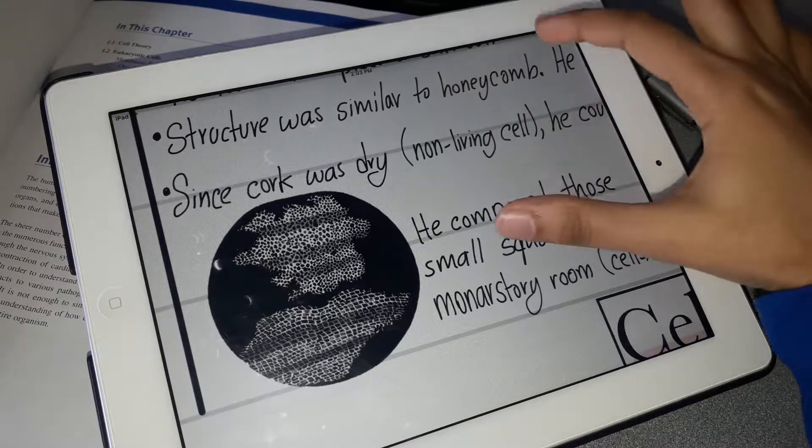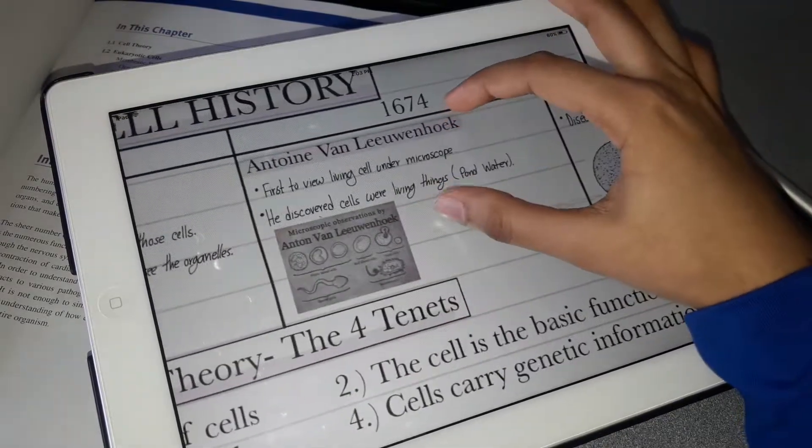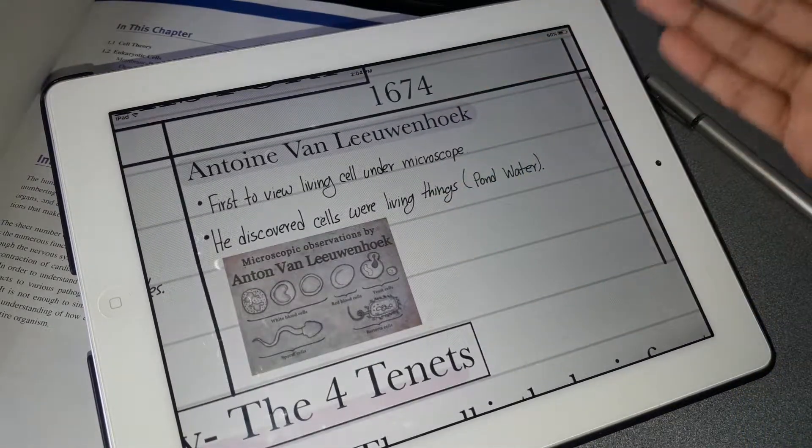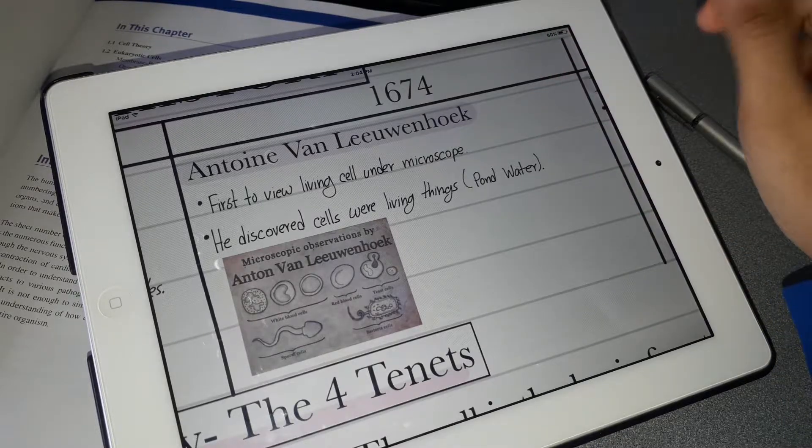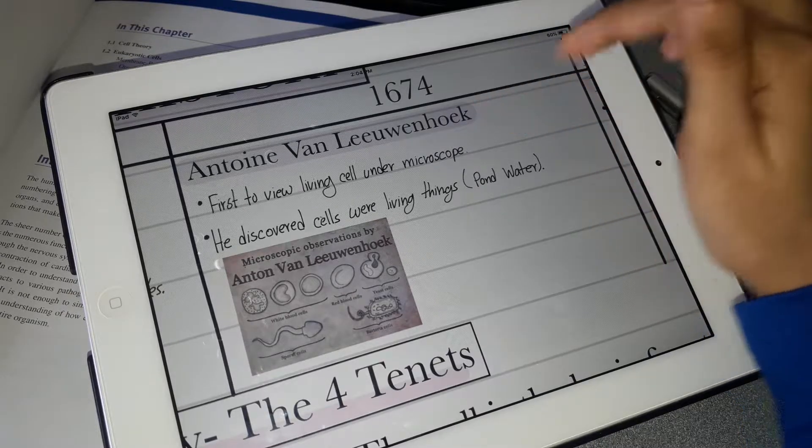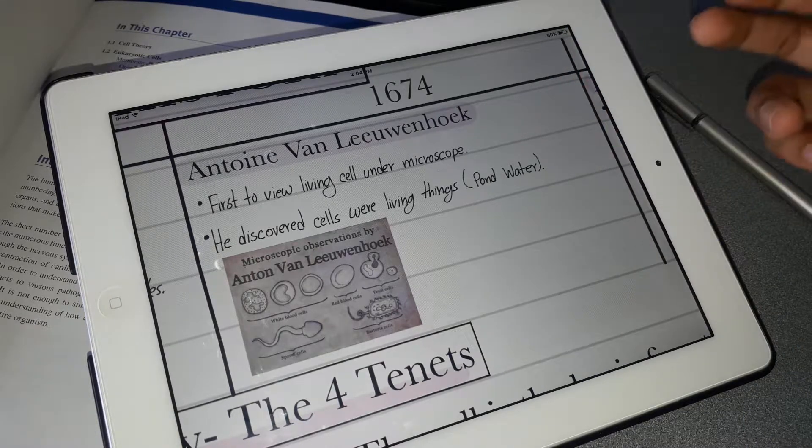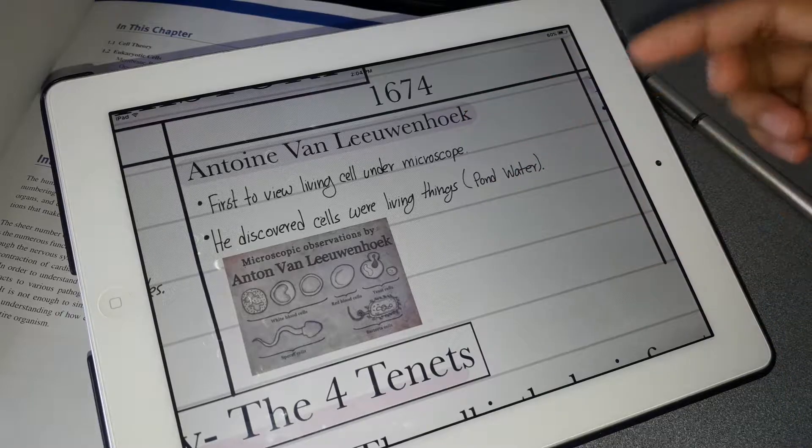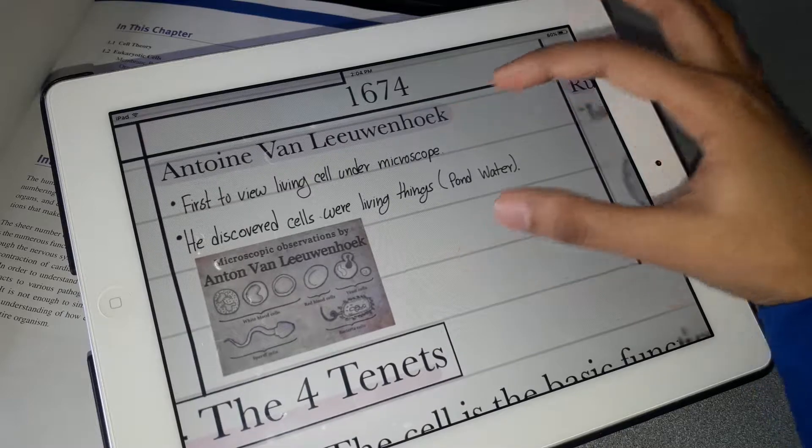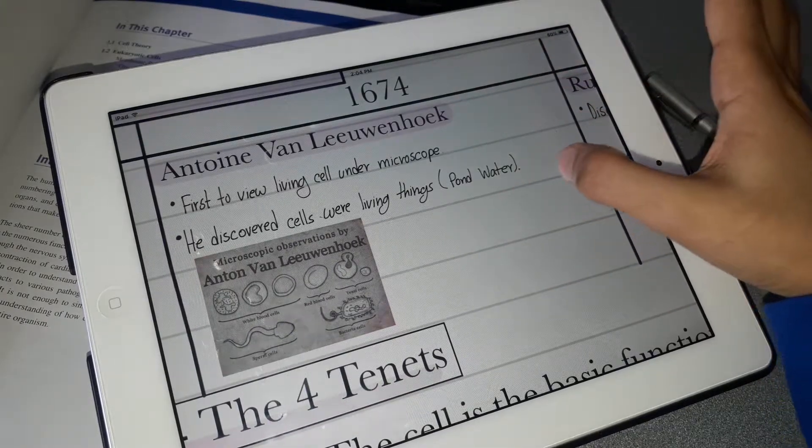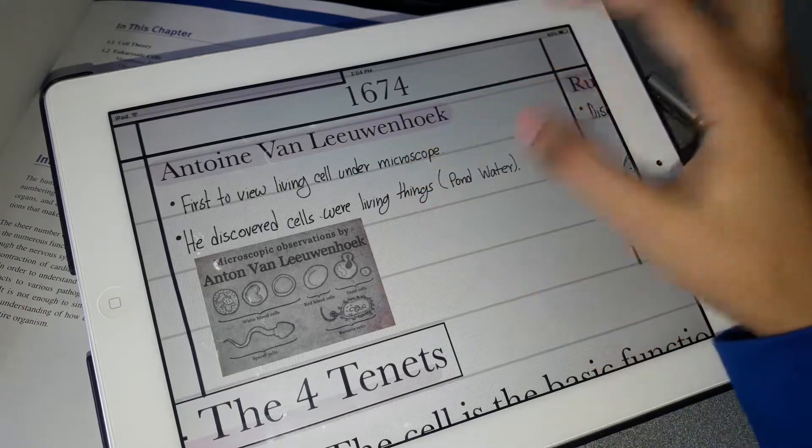Later on, in 1674, Antonie van Leeuwenhoek was actually the first scientist who viewed living organisms under a microscope. He discovered that cells were living things. A few of the organisms he viewed under the microscope were pond water and a couple different types of sperm cells.